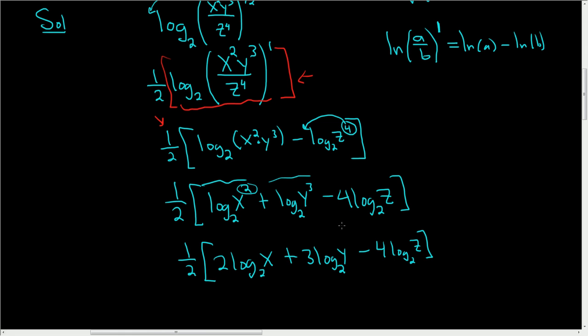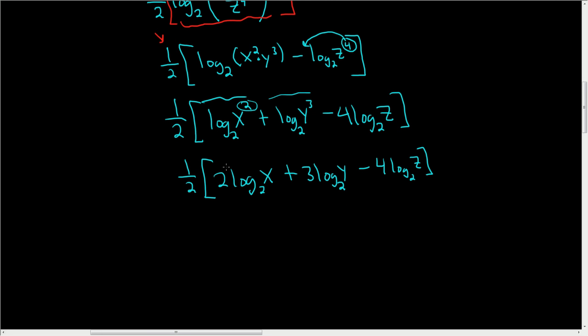We are almost done. And then the last thing to do is distribute the one-half. So let's do that carefully. So we have one-half, and then it's being multiplied by 2, so it cancels. We just get log base 2 of x.